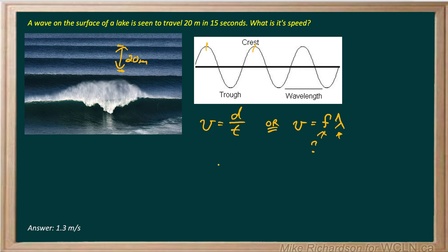So I'm going to use the first version, our generic velocity equation. 20 meters divided by 15 seconds gives me a speed of 1.3 meters per second.